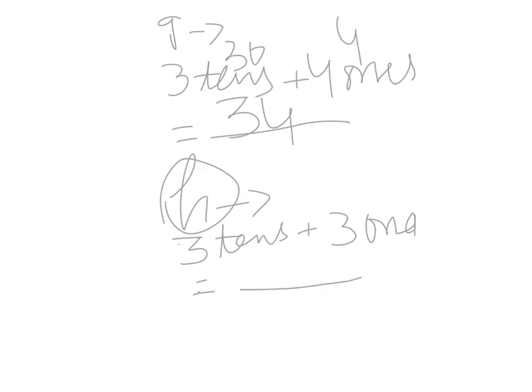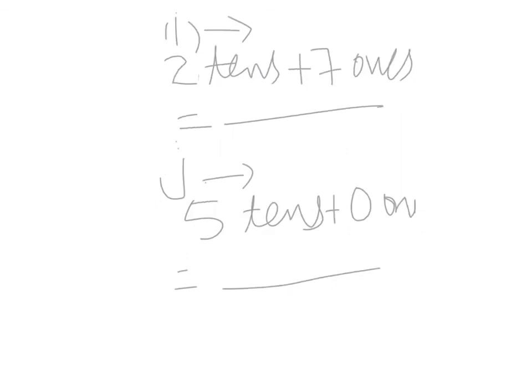Part h is three tens plus three ones. Three tens equal thirty and three ones equal three, so thirty plus three equals thirty-three. Three tens plus three ones makes thirty-three.